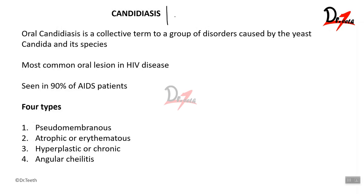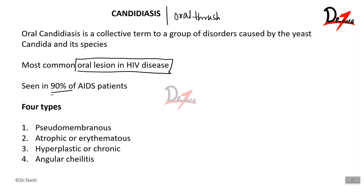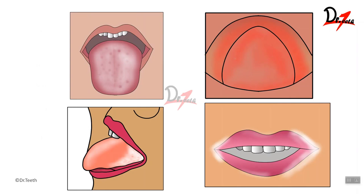Let's first talk about candidiasis, also called oral thrush. It is a collective term describing a group of disorders caused by the yeast Candida and its species. It is the most common oral lesion in HIV disease — an important MCQ point. 90% of people suffering from AIDS will have candidal disease. There are four types: pseudomembranous, atrophic or erythematous, hypertrophic or hyperplastic, and angular cheilitis.